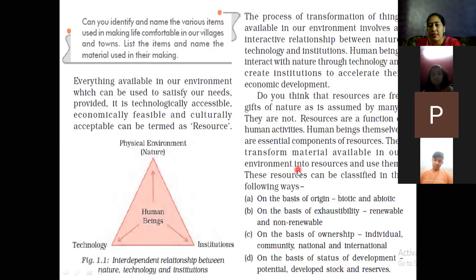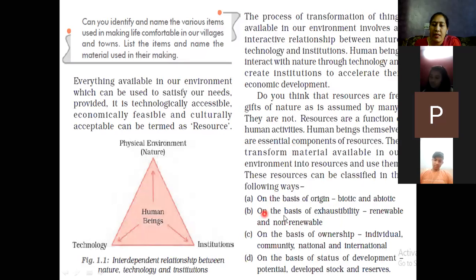Now we will classify the different resources. First, on the basis of origin, we divide resources into two parts: biotic and abiotic. Second, on the basis of exhaustibility: renewable and non-renewable. Third, on the basis of ownership: individual, community, national, and international. Fourth, on the basis of development potential: developed, stock, and reserve.